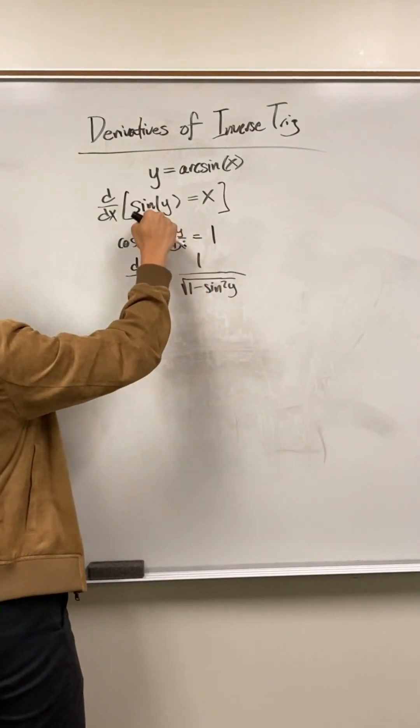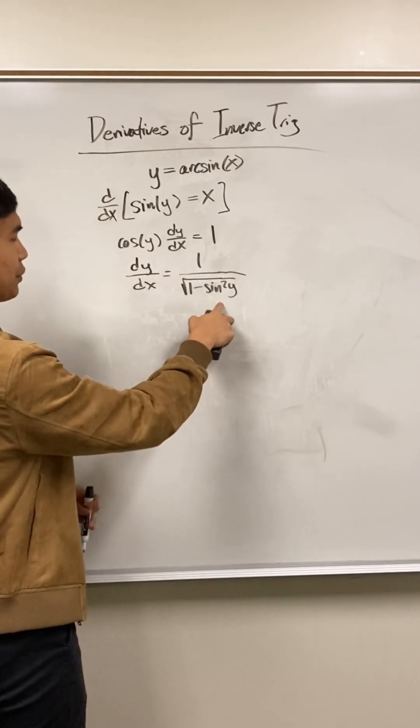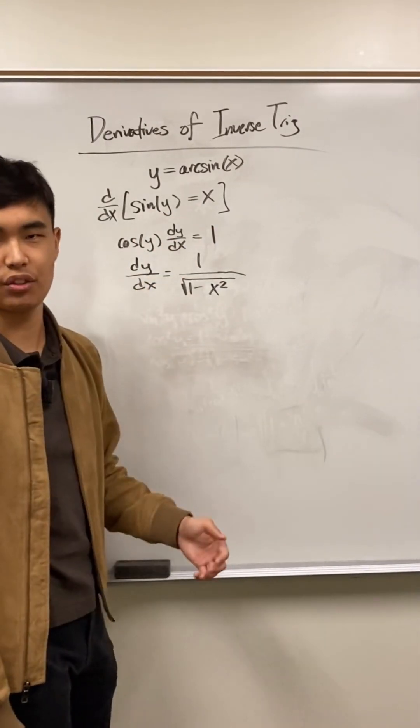But if you look up here, remember, we said the sine of y is equal to x. So this goes from sine of y squared to just x squared. And that's how you find the derivative of arcsine.